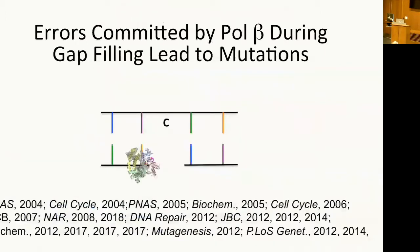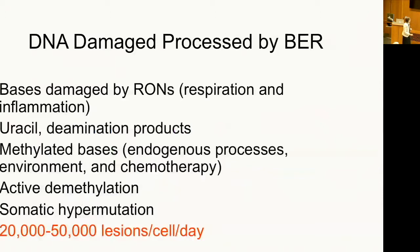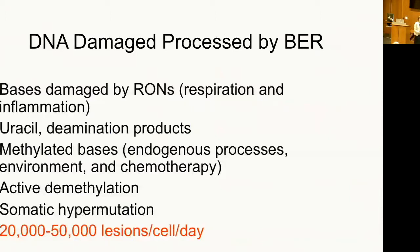A lot of people work on Pol beta — it's actually a competitive field. Our work shows that errors committed by DNA polymerase beta during single nucleotide gap filling can actually lead to mutations. Base excision repair operates on 20,000 to 50,000 lesions per cell per day. It's a major genome maintenance pathway that processes bases damaged by reactive oxygen and nitrogen species, uracil and deamination products, and methylated bases. With chemotherapy especially, if you have base excision repair mutations, our lab has shown that you can be resistant to alkylating agents, and BER is also involved in active demethylation, transcription, and somatic hypermutation.